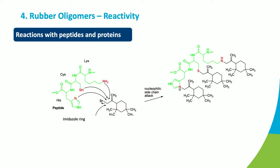Proteins and peptides can also undergo a reaction with the brominated oligomers. Displayed here is a peptide consisting of lysine, cysteine, and histidine, which have three different functional groups that could interact with the C13 bromide oligomer: the amine function in lysine, the thiol group in cysteine, and the imidazole ring in histidine. All three of those functional groups can interact via a nucleophilic substitution reaction with the brominated oligomer.